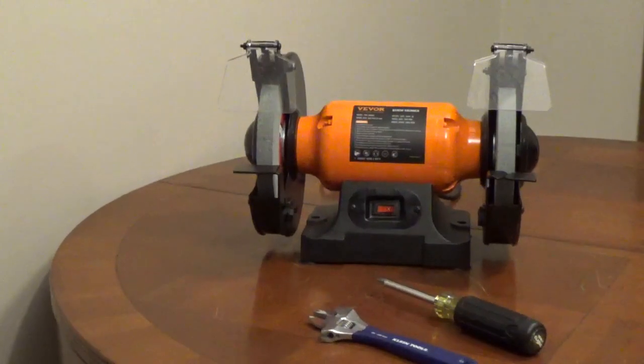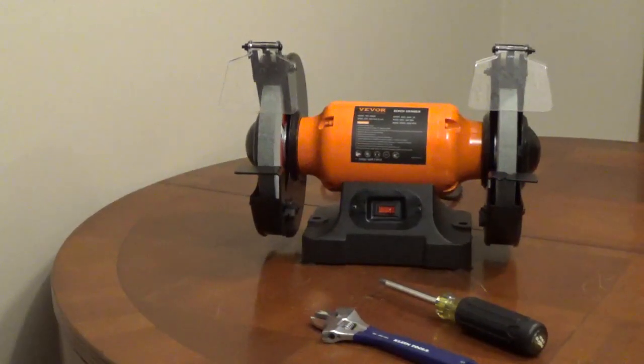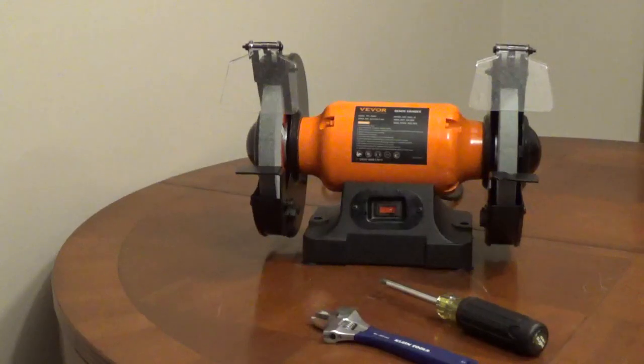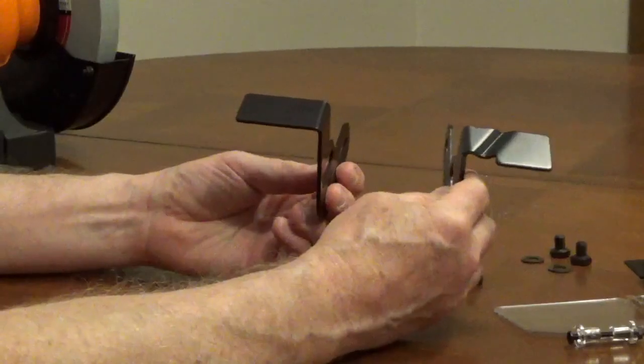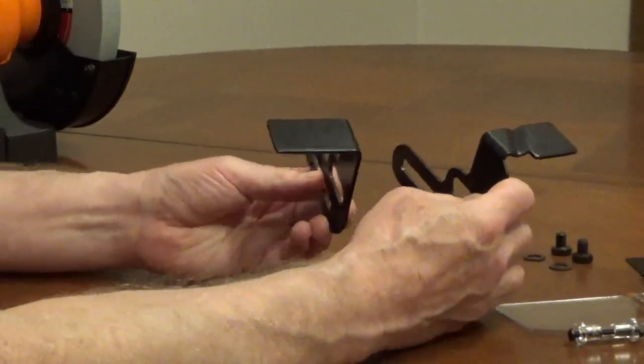To assemble the Vever 3-Amp 8-Inch Single-Speed Bench Grinder, you need to install the tool rests, eye shields, and spark arresters. Unplug the grinder when doing any adjustments.